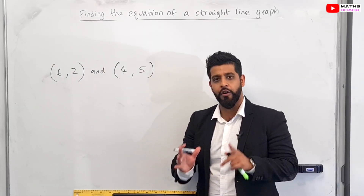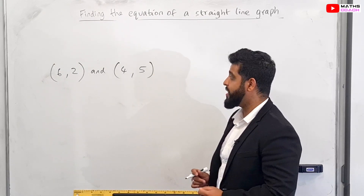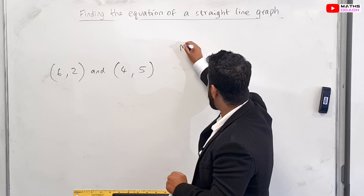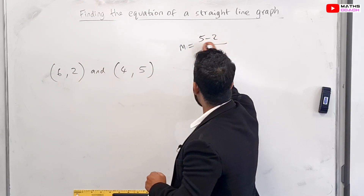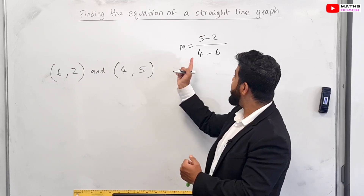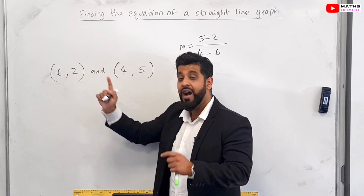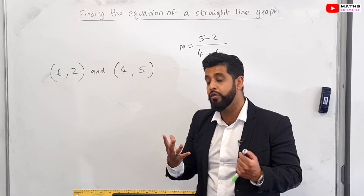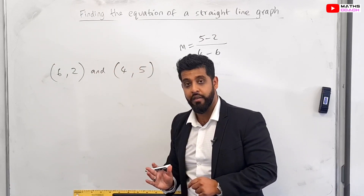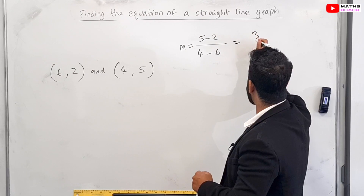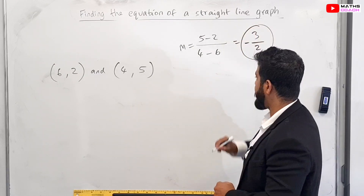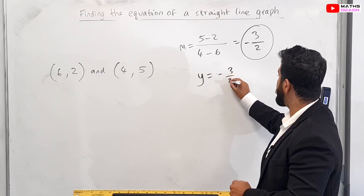Now the last two examples didn't include something you might see in your exam, so I've chosen two coordinates that will give a negative gradient. Let's find the gradient: we've got 5 minus 2 over 4 minus 6. Notice I did 4 minus 6 because I did 5 minus 2 — students often swap these for convenience, but you must stay consistent. So 5 minus 2 is 3 and 4 minus 6 is minus 2. So we're going to have a negative fractional gradient. Our equation so far is y = −(3/2)x + c.